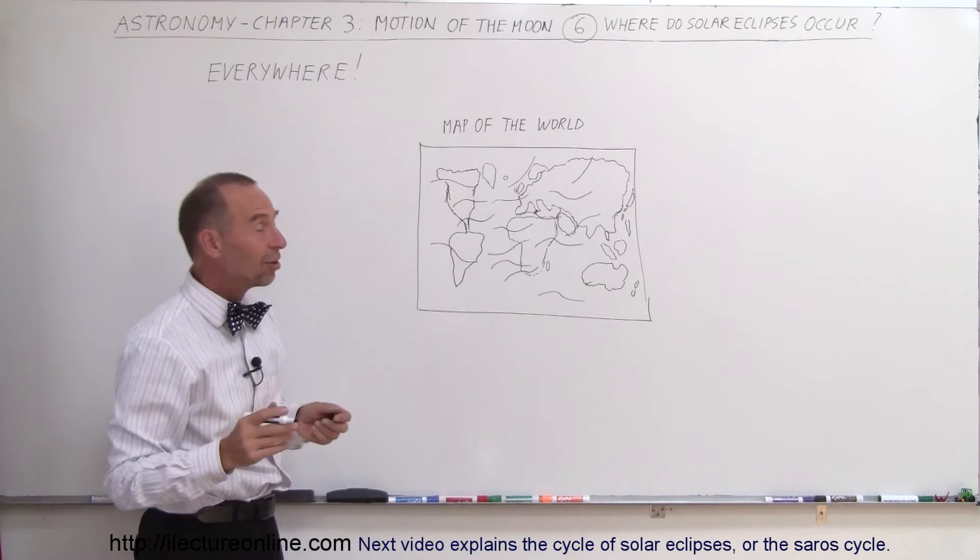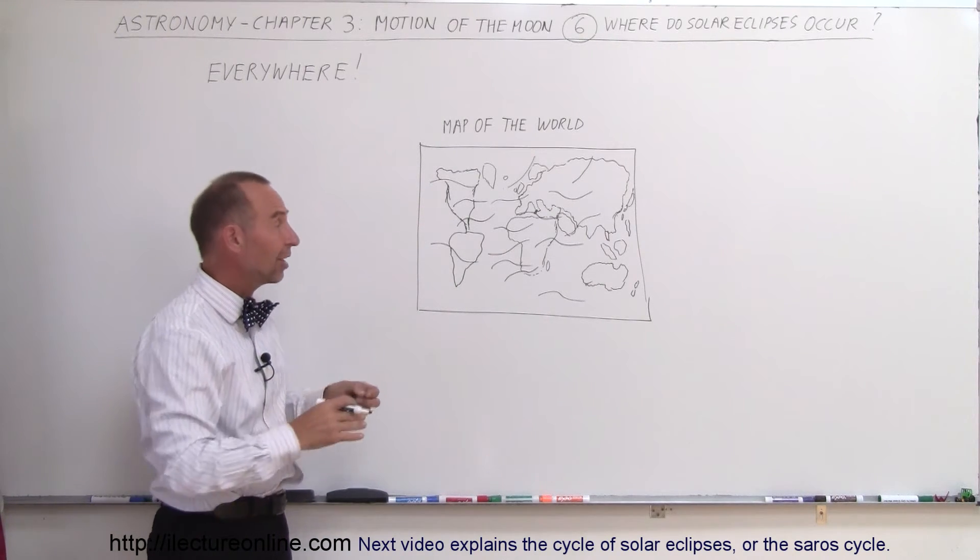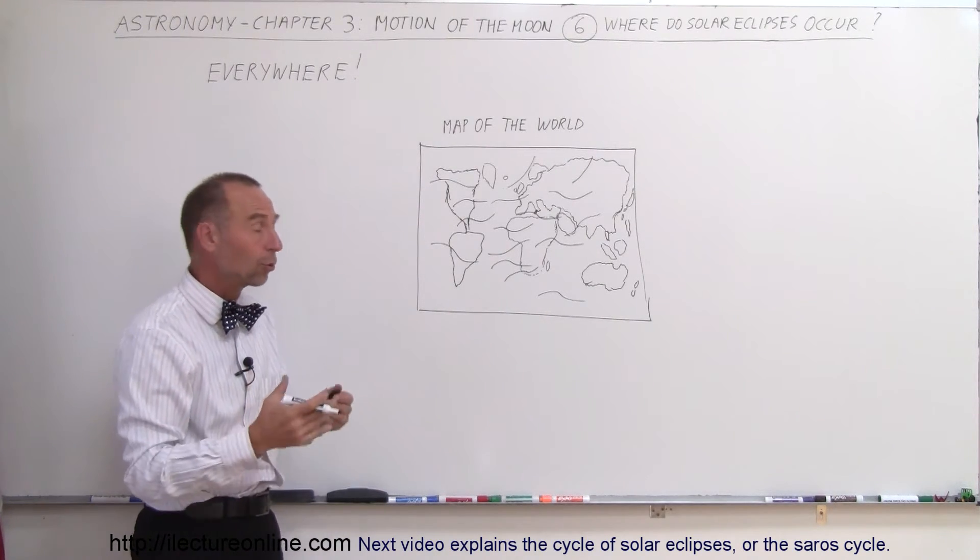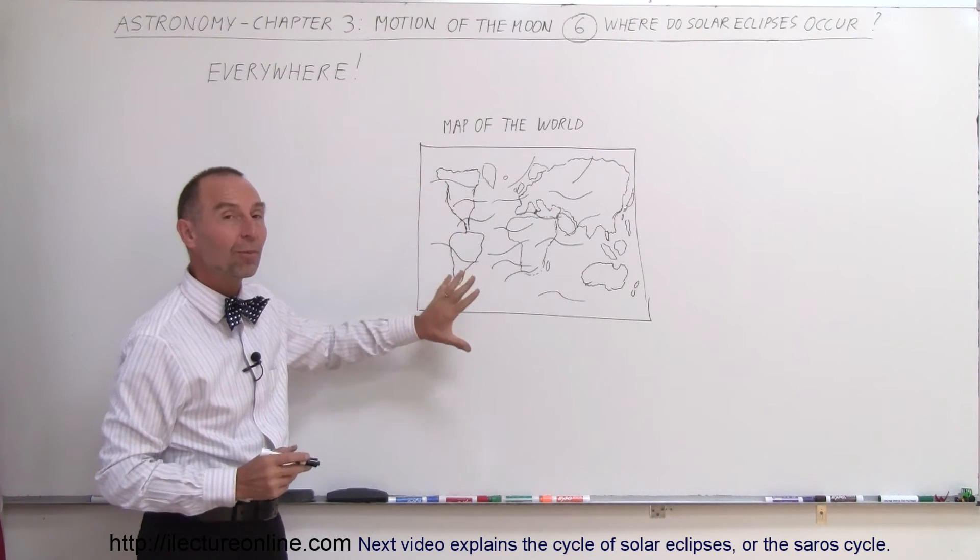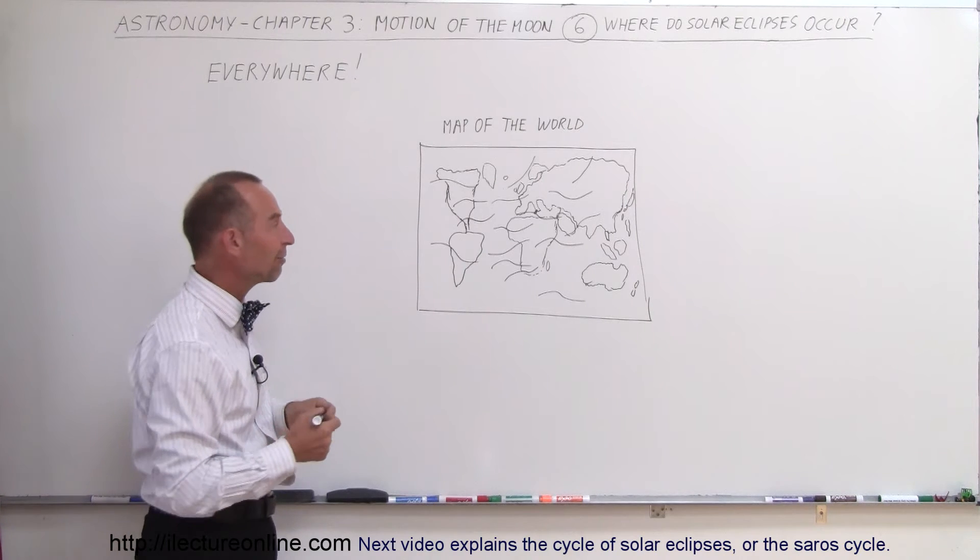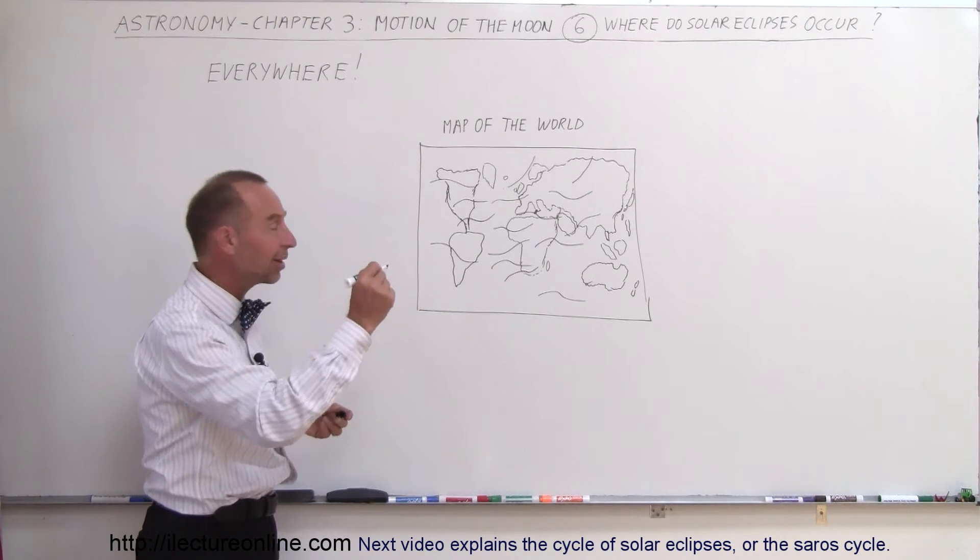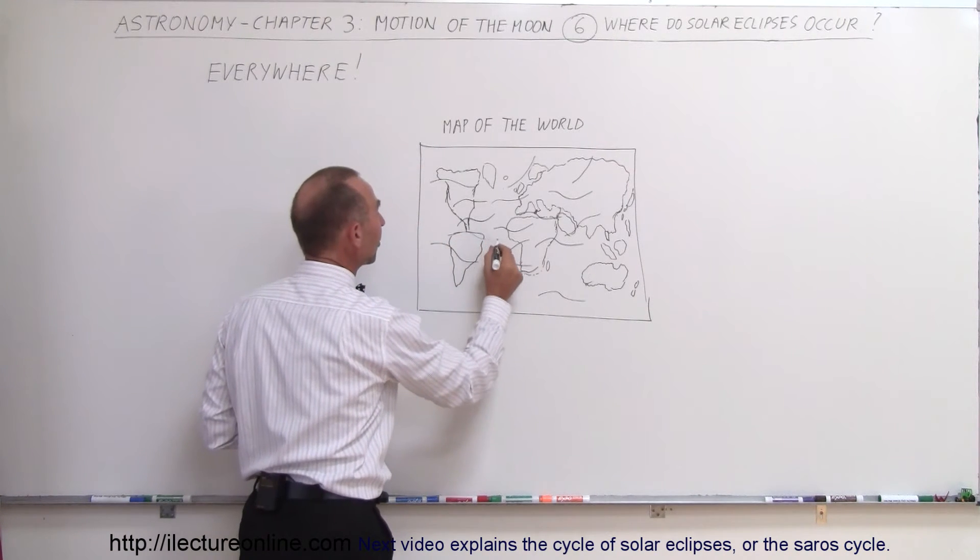And in a thousand year period, if you were to do that, and let's say there's two, sometimes three, sometimes more solar eclipses in a year, over time, the whole Earth will simply be covered. If I stood here for about five or ten more minutes and just kept on drawing lines on there, you can see that slowly but surely, the whole Earth would be covered.